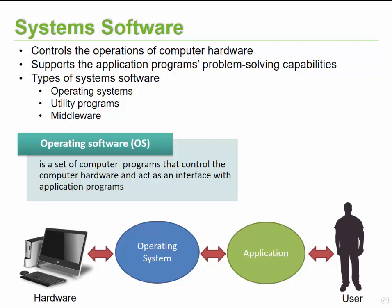The operating system, often referred to as the OS, includes examples such as Windows and iOS. It can be defined as a set of programs that control the computer hardware and act as an interface between applications. The hardware has the operating system installed on it — for example, Windows — which enables applications to communicate with the hardware, and the person communicates through the application, so there is a continuous flow of information between the OS, hardware, and applications.